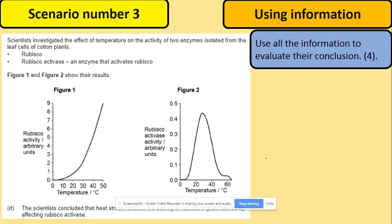Let's have a look at the scenario. We've got another using information to evaluate the conclusion. The conclusion says the scientist concluded that heat stress reduces the activity of rubisco in plant leaves by affecting rubisco activase. Let's have a look first at what we've got here. We've got rubisco, so that's the enzyme involved in the light independent reaction. And we've got rubisco activase, enzyme that activates rubisco. Now we know its job.